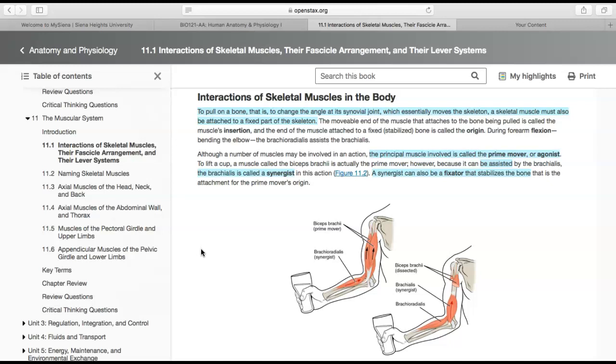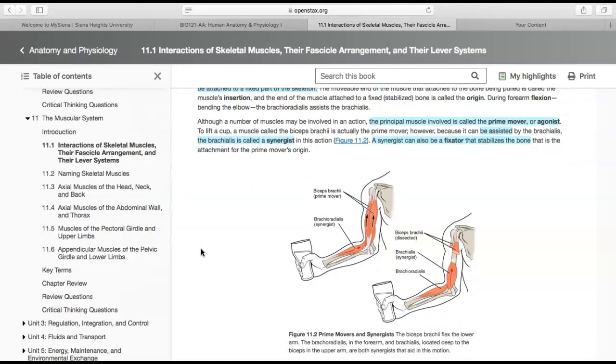When we look at forearm flexion, which is bending the elbow, the brachioradialis assists the brachialis. Although a number of muscles might be involved in an action, when we look at the principal muscle that's involved, we call it the prime mover or agonist. To lift a cup, the biceps brachii is actually the prime mover.